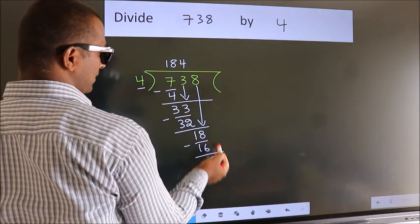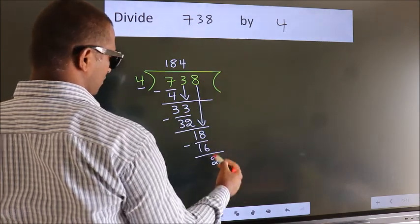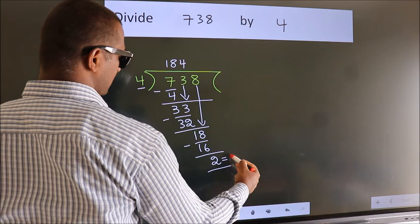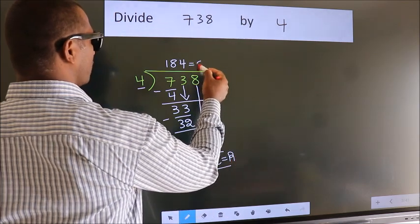No more numbers to bring down, so we stop here. This is our remainder. This is our quotient.